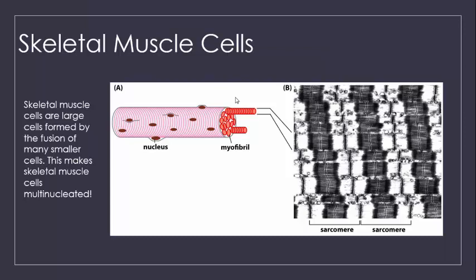Within the cytoplasm of the cell, a majority of the cell is composed of myofibrils. These myofibrils contain the fibers that allow for muscle contraction and can run the entire length of the cell. These myofibrils consist of chains of sarcomeres, and it is this repeating pattern that gives muscle tissue a striated look.